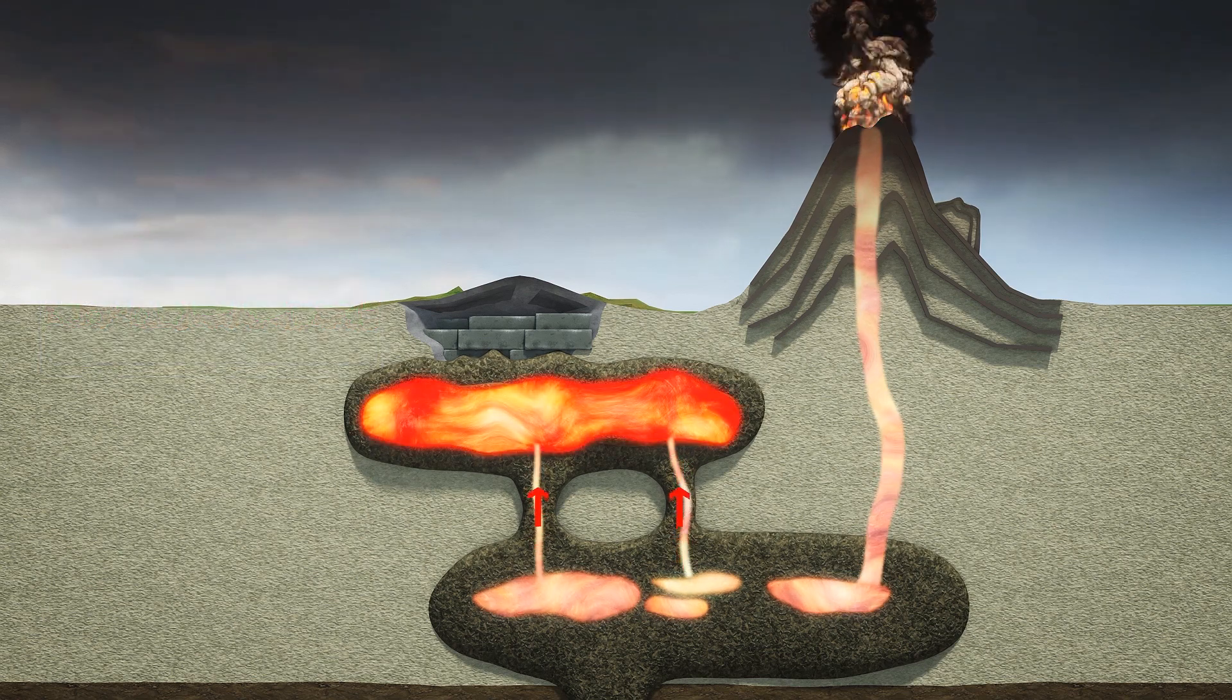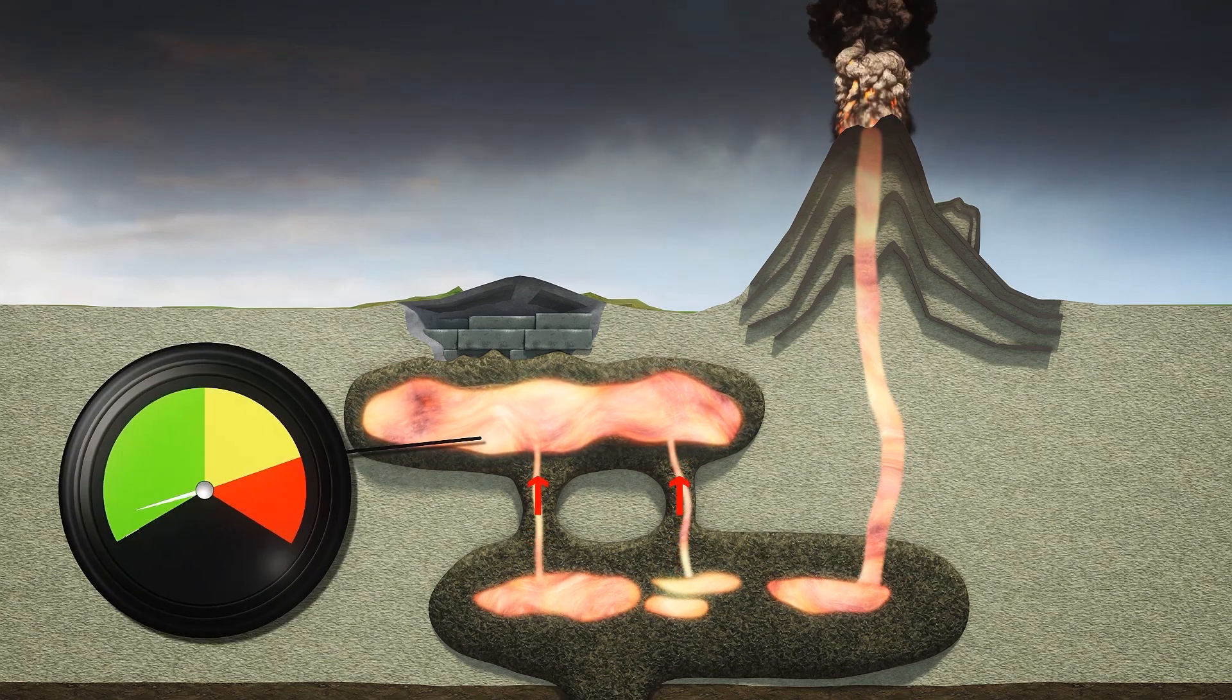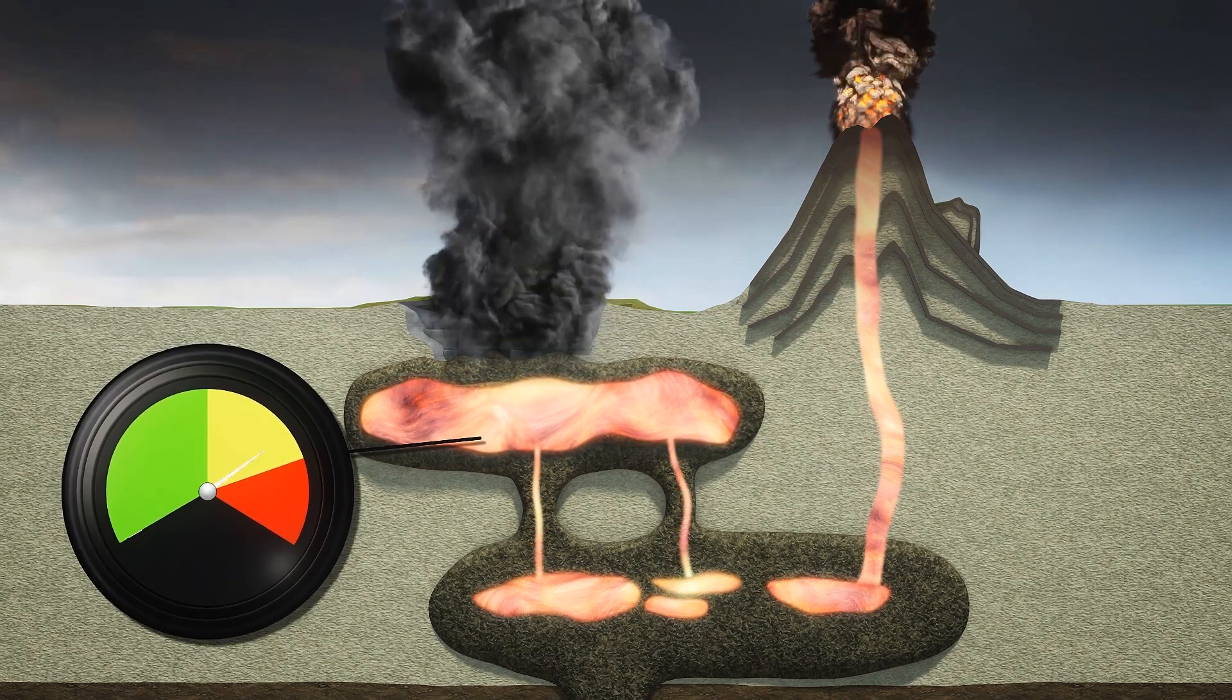When hotter magma later flows into the top chamber from below, it causes pressure rises, which can force the cooler, more explosive magma upwards.